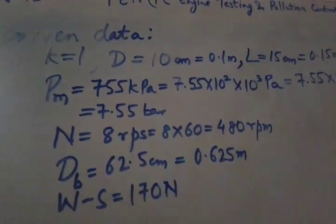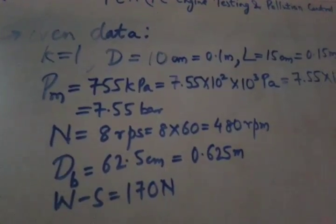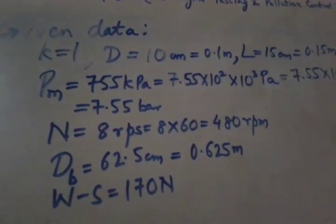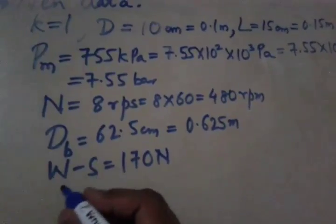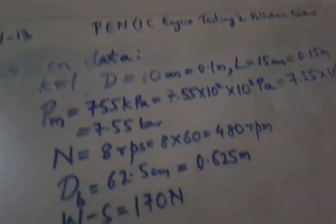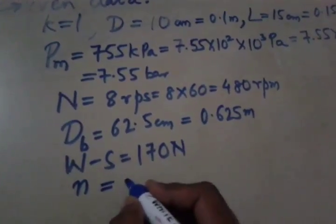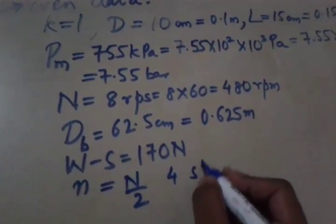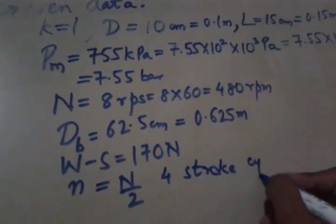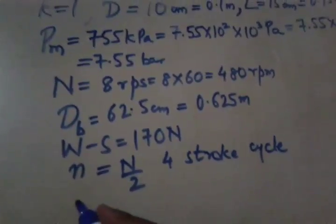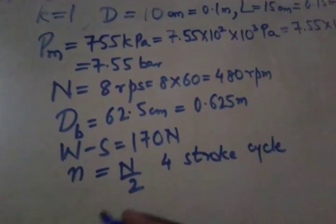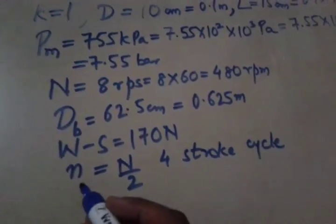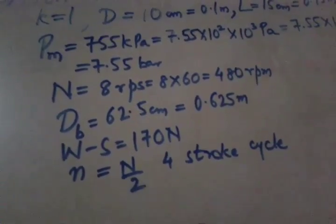Also it is given that it is 4 stroke cycle, so our n will be equal to N divided by 2 since it is 4 stroke cycle. If it is 2 stroke cycle, so small n will be equal to capital N. So in this case it is small n is equal to N by 2.